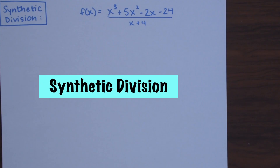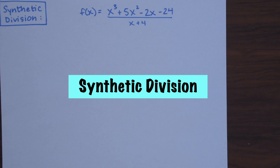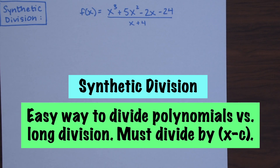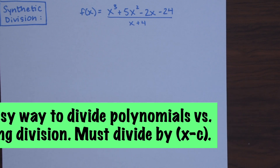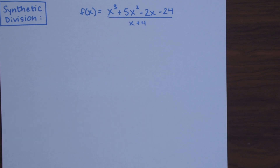Synthetic division is an easier way to divide polynomials versus long division. We can only use this method when we're dividing a polynomial by a binomial in the form of x minus c, where c is a constant number — so it could be like 2 or three-fourths, just a number.